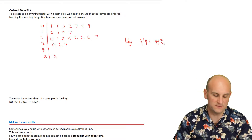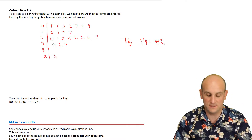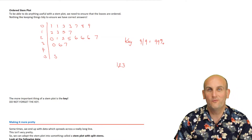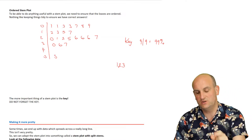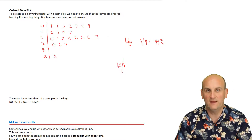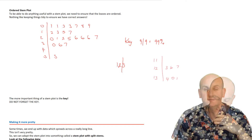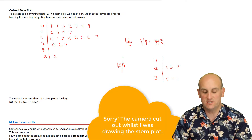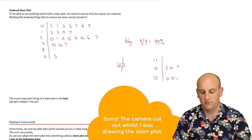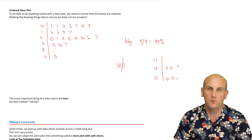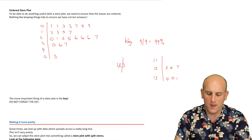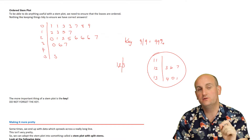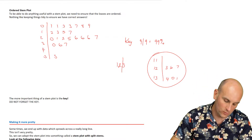A lot of people ask what happens with three-digit numbers. Well, remember: the last digit is always the leaf, and everything before that is the stem. So if you have the number 123, the stem is 12 and the leaf is 3. The stem 12 then represents values like 123, 126, 127, and so on. Just make sure the last digit is your leaf, and the rest should be fine.